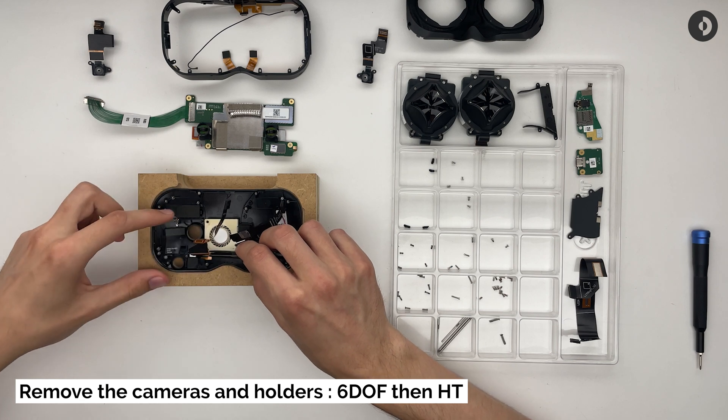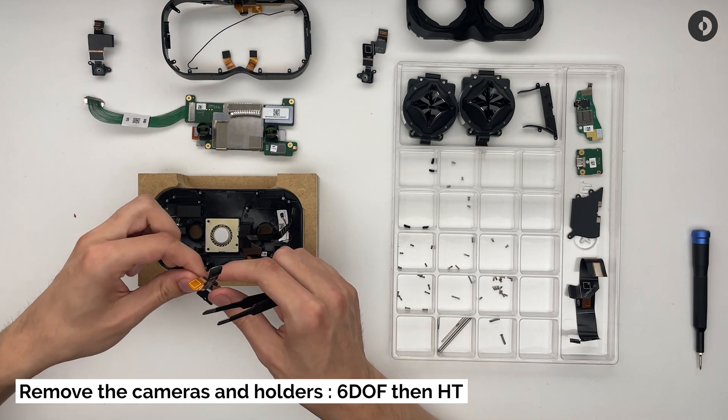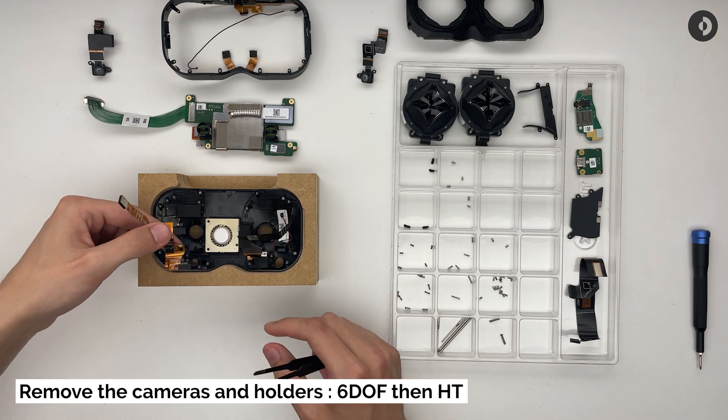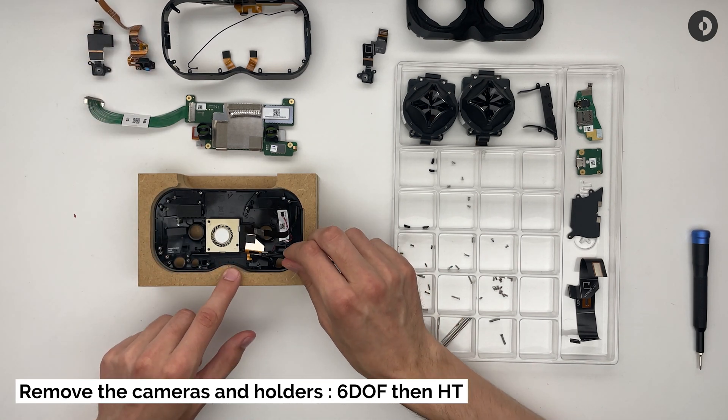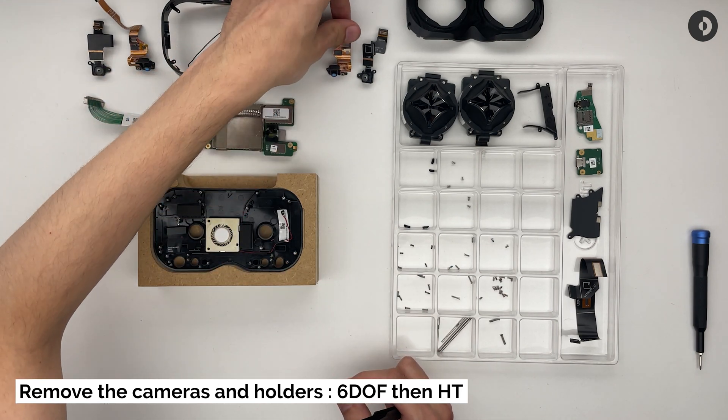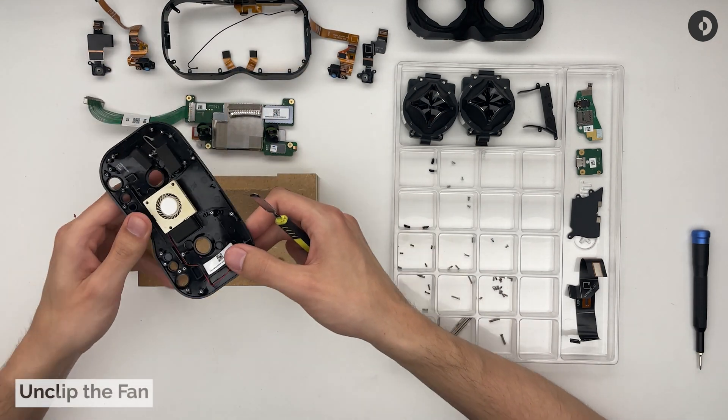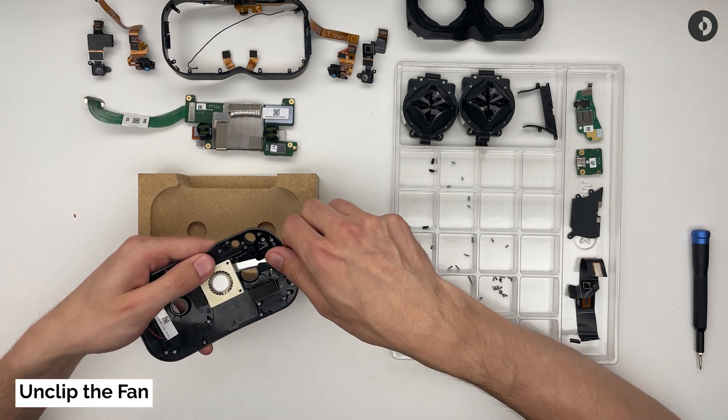Then proceed to remove the hand tracking cameras. Using a rigid tool, you can now unclip the fan from the faceplate.